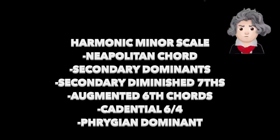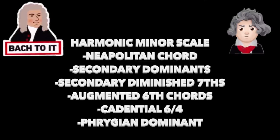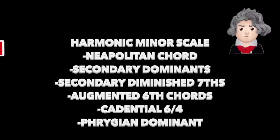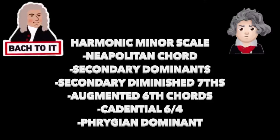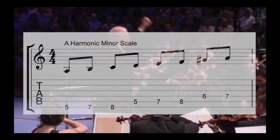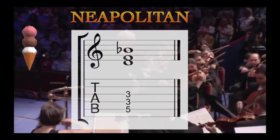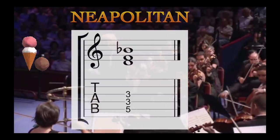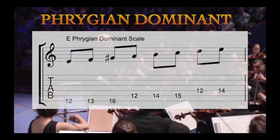This is Shred, and today I'm gonna show you how to master the neoclassical sound using classical composition techniques. By learning the harmony of classical composers like Mozart, Beethoven, and Bach, we can repurpose these sounds to become neoclassical metal riff lords. We'll be covering the harmonic minor scale, cadences, the Neapolitan chord, augmented sixth chords, secondary dominance, secondary diminished chords, Phrygian dominant, and more.